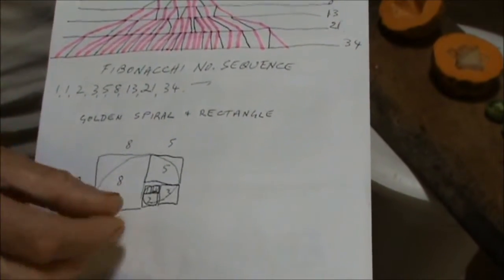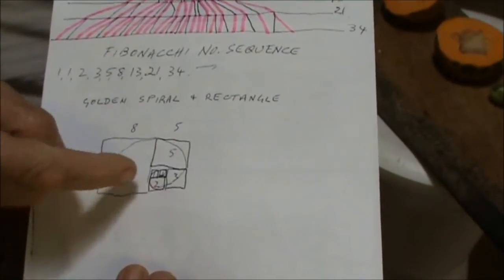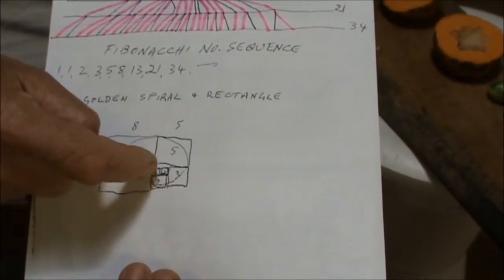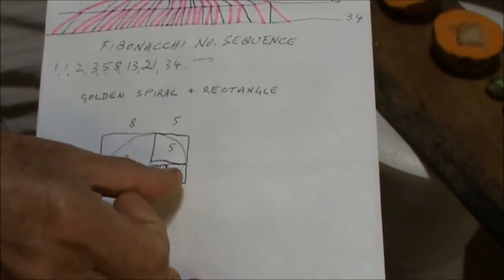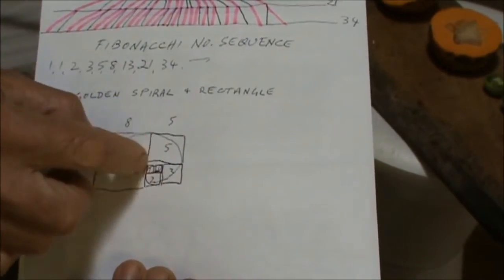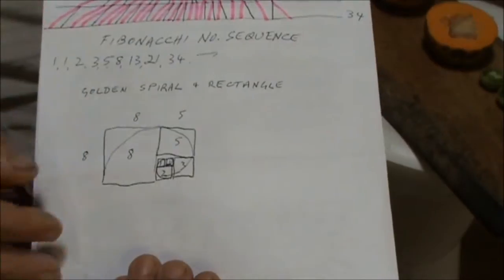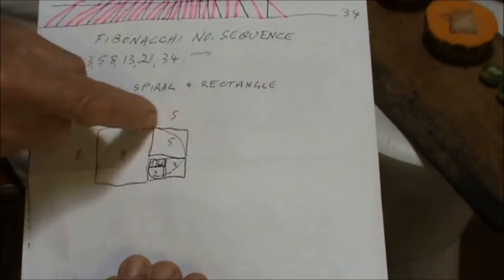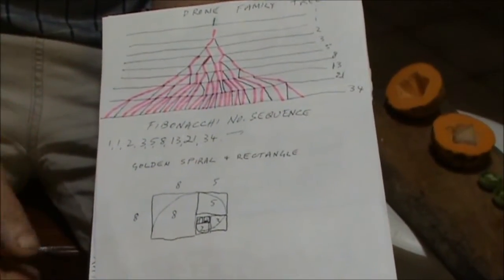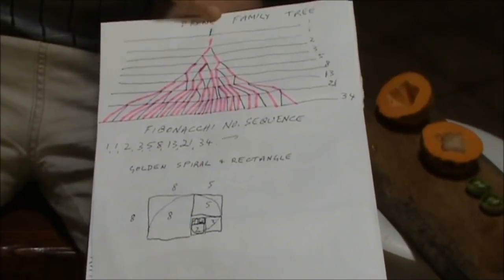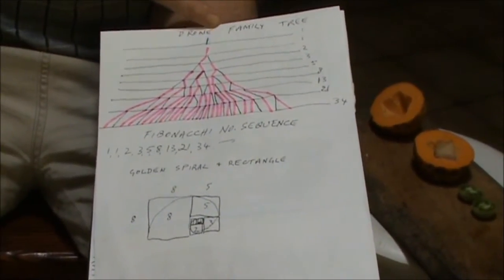If you make boxes out of these numbers — one, two, three, five, eight — that gives you the golden spiral and also the golden rectangle. In a bee colony, the drone only has one parent, which is the mother.